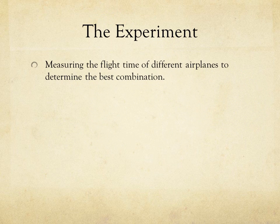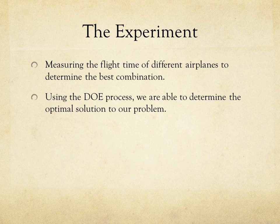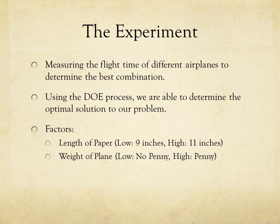Our experiment involved testing four airplanes with two separate factors to determine the maximum flight length with a best optimal solution using the DOE process. The two factors included the length of the paper the airplanes were folded out of, with the low being 9 inches and the high being 11 inches. The second factor was the weight of the airplanes, modified using pennies — the low had no pennies added, while the high had a single penny added to the center of the airplane.